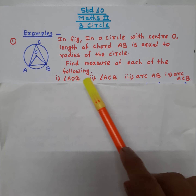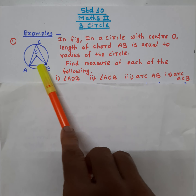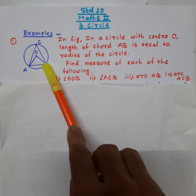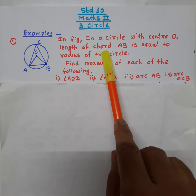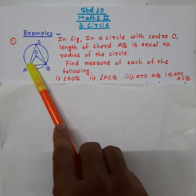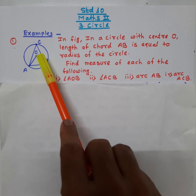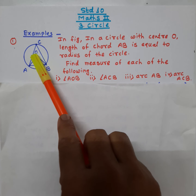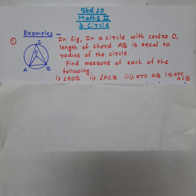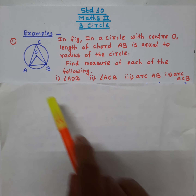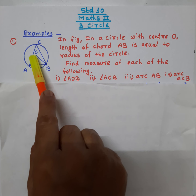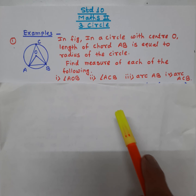Here, AB is a chord. When AB is a chord and OA and OB are radii of the circle, and it is given that these are equal, this means triangle AOB is an equilateral triangle. When you know it is an equilateral triangle, you always know the measure of each angle is always equal to 60 degrees. Therefore, angle AOB is equal to 60 degrees.